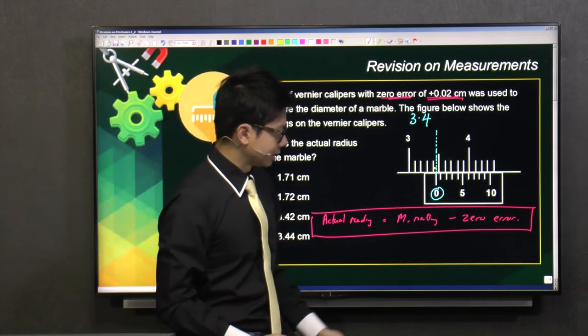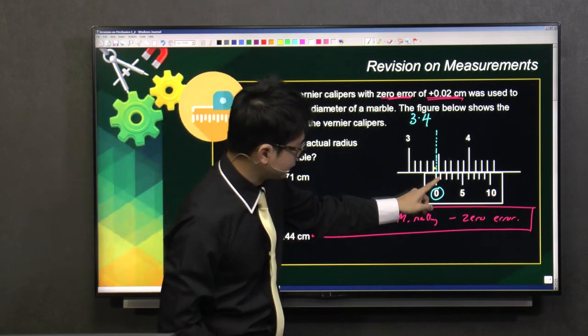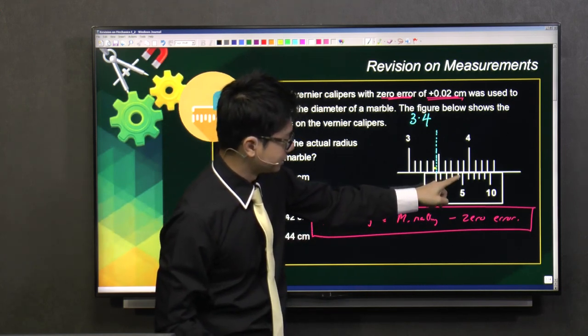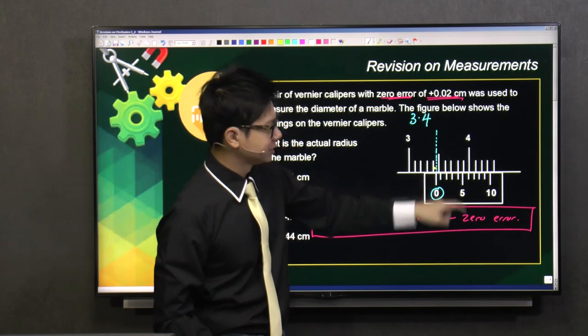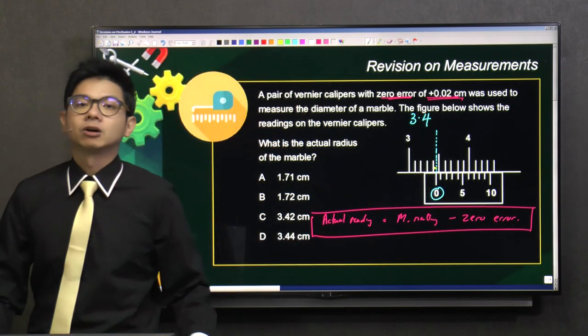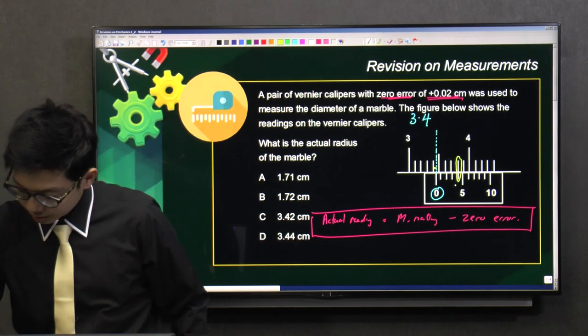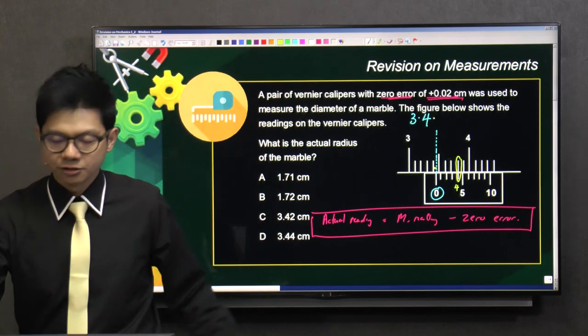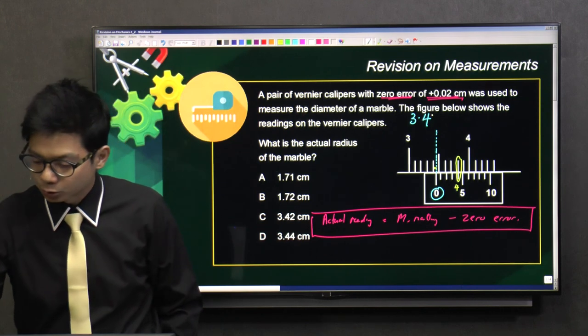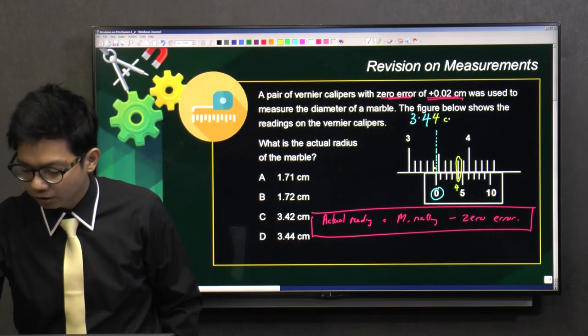So you find the straightest line. This is zero, this is one, this is two, this is three, this is four. You can see four forms the straightest line with the marking on the main scale. So the last digit for our vernier caliper reading, it has to be 3.44 cm.